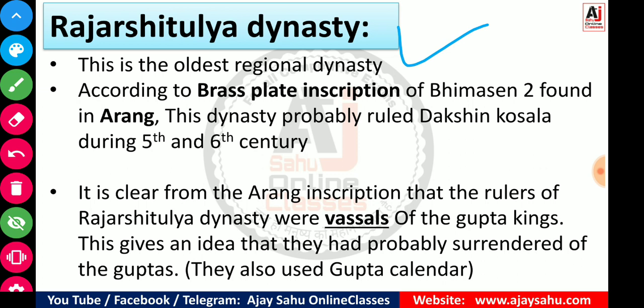According to the brass plate inscription — Tamra Patra — of Bhimsen 2, found at Arang, this dynasty probably ruled Dakshin Kosla (i.e., Chhattisgarh) during the 5th and 6th century. This is how we know about the Arang Tamra Patra of Bhimsen 2. It is clear from the Arang inscription that the rulers of the Rajarshi Tulli dynasty were vassals — in a subordinate position — of the Gupta kings.